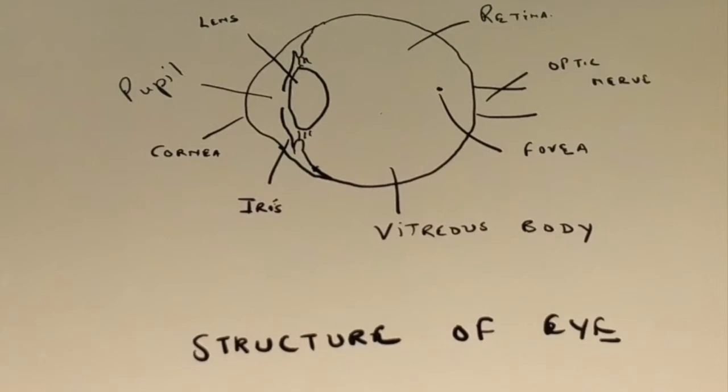Behind the iris, you can see there is a structure called the lens, which essentially focuses the light onto the retina.